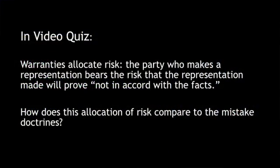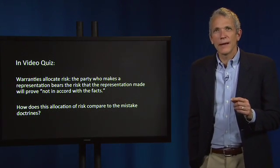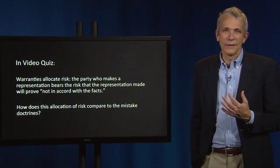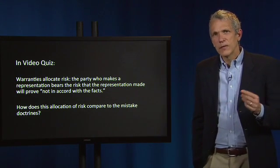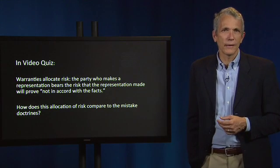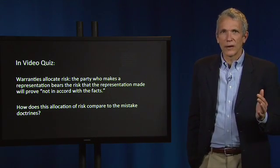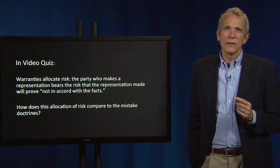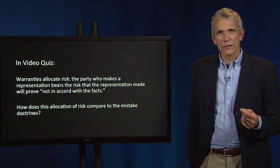Warranties are very important because they allocate risk. The party who makes a representation bears the risk that the representation made will prove "not in accord with the facts." How does this allocation of risk compare to the mistake doctrines we've earlier discussed? Well, mistake doctrines tend to let sellers out of contracts where there are basic mistakes that increase the value of the thing traded — think of Sherwood v. Walker. And the mistake doctrines let buyers out of contracts where there are basic mistakes that decrease the value of the thing traded — think of the Lenowy case. That is, you're let out, the buyer or the seller, unless the contract allocates the risk to the other side. A seller making a representation is one of the ways that the parties can allocate a risk to the seller or to the buyer.